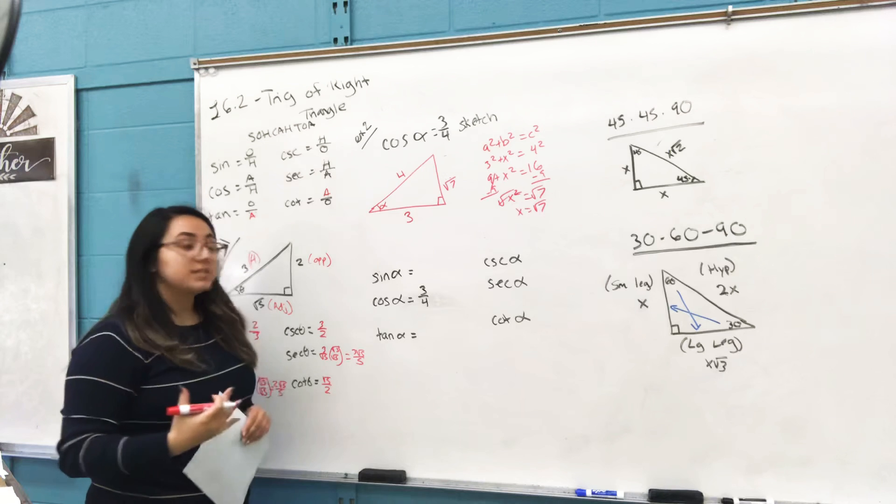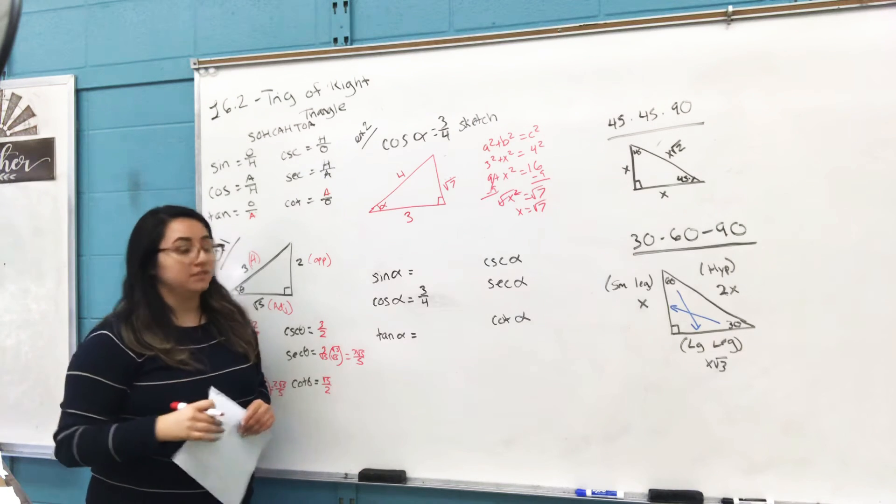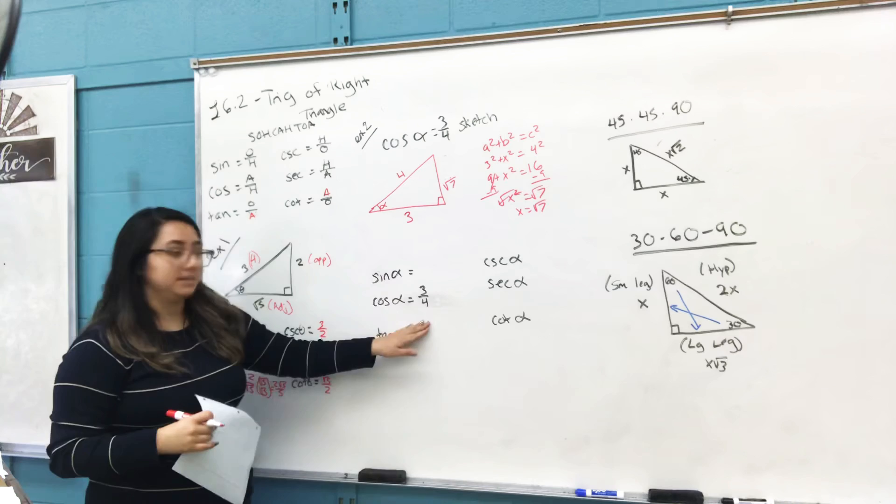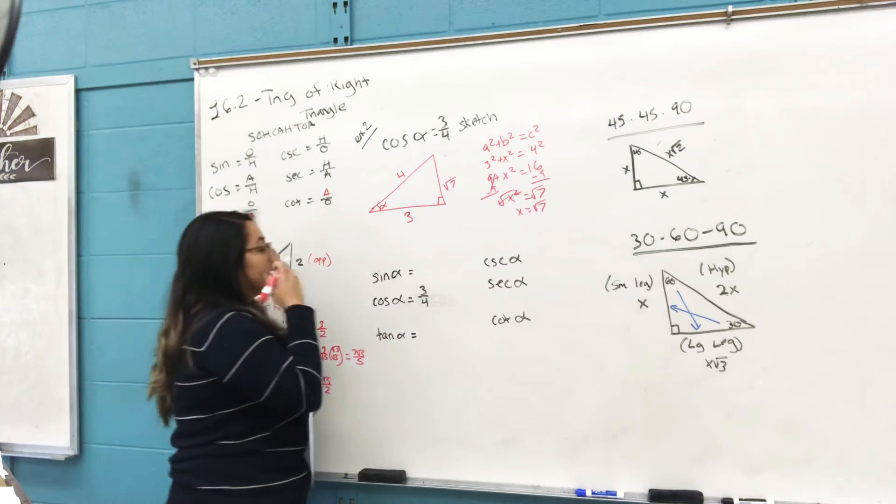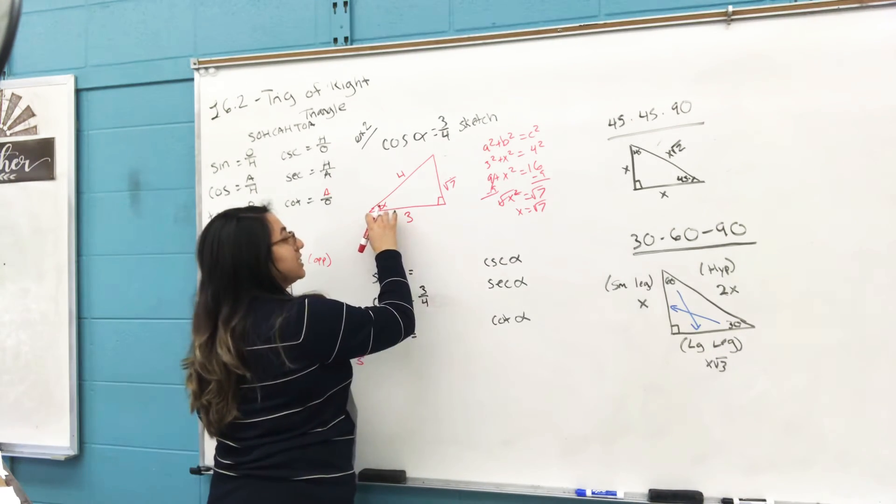Now from all your three sides, you can go ahead and find all the trig functions. The only thing they gave us was cosine, so I'm going to leave it there. Your sine of this angle—sine is opposite over hypotenuse.